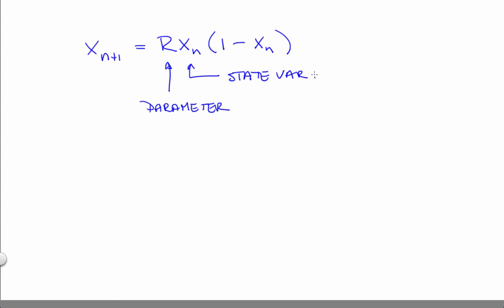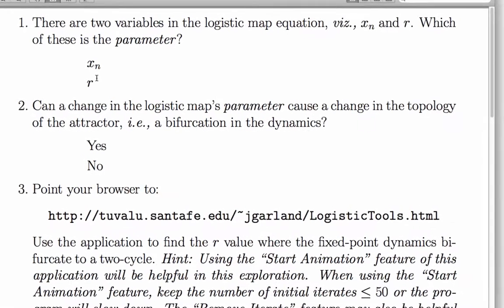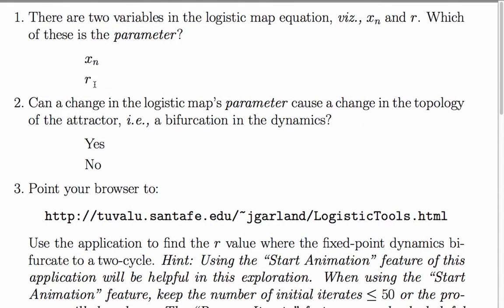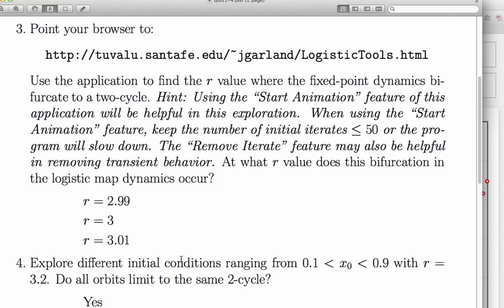Changes in that parameter can most certainly induce bifurcations in the dynamics. The answers to the first two problems are r is the parameter, and that changes in that parameter value can certainly induce a bifurcation in the dynamics, which changes the topology of the attractor. The third problem was about zeroing in on the bifurcation point.